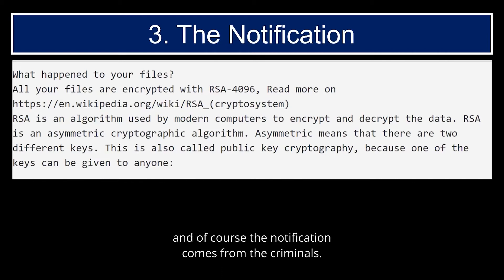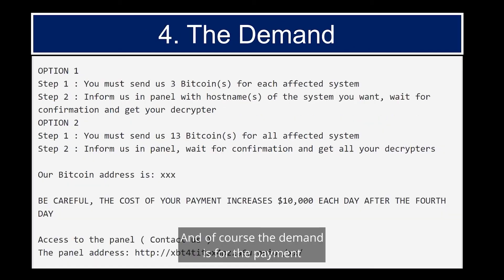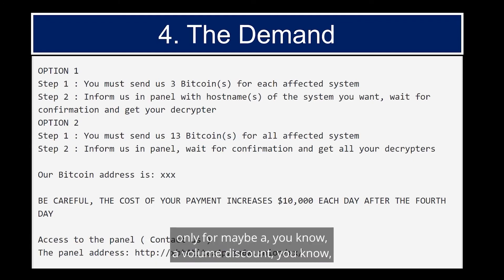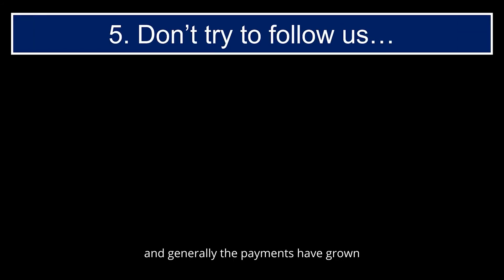The notification comes from the criminals. They'll tell you about encryption and asymmetric cryptographic algorithms — but you don't have time for any of that; you're just trying to get up and running again. Of course, the demand is for payment. Generally they want a very large payment, but sometimes they'll give you a discount — isn't that nice of them? They won't charge you per system encrypted, maybe offering a volume discount: one payment of $50,000 for all computers to be unencrypted.